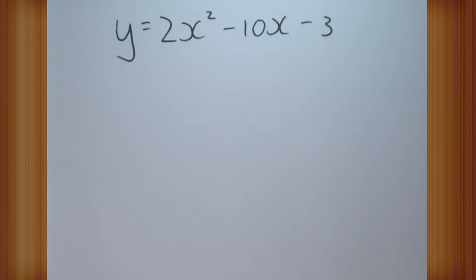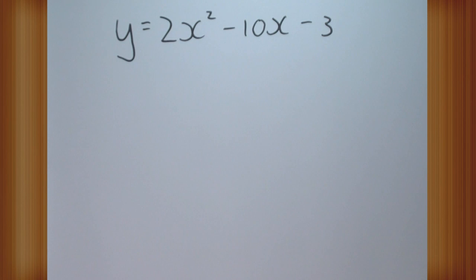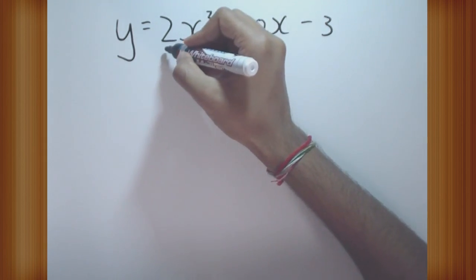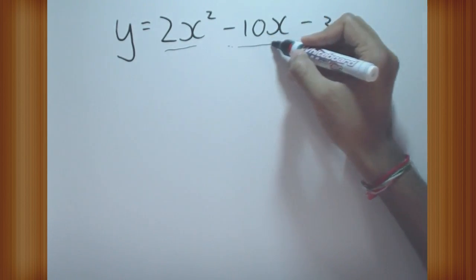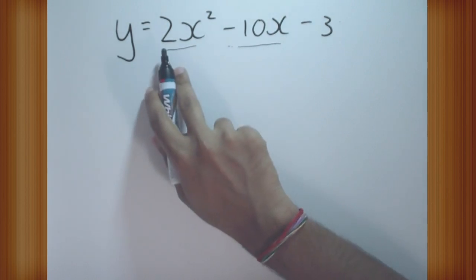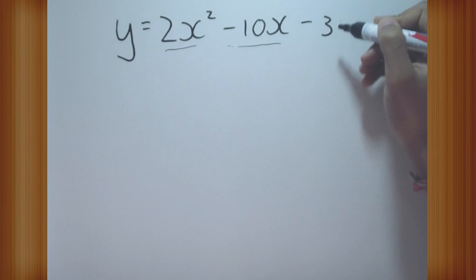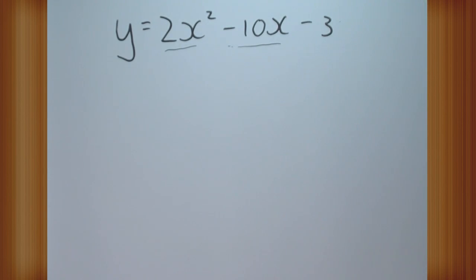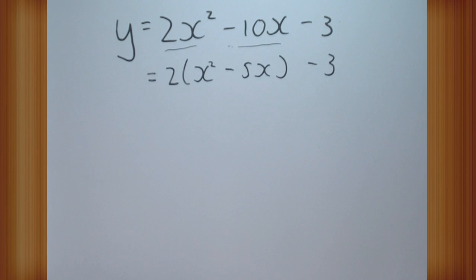Now let's look at a trickier example: y equals 2x squared minus 10x minus 3. Now we have a coefficient in front of the x squared term, and that changes things because I don't know how to make a squared bracket when there's a number in front. I know how to make a squared bracket without that number, so I'm going to take that number out as a common factor — but only from the x squared and x terms, not the constant. We don't need the constant for factorizing because we're going to make our own constant. So taking 2 out as a common factor gives us 2 times open bracket x squared minus 5x, close bracket, minus 3.